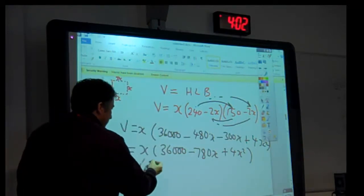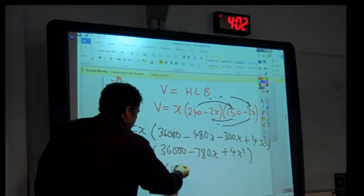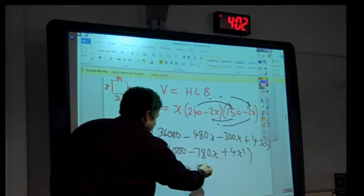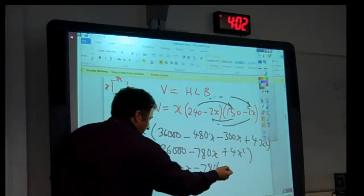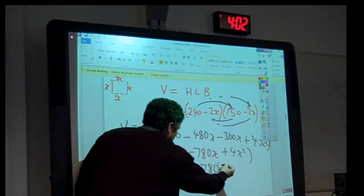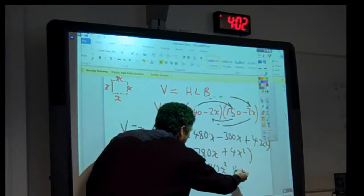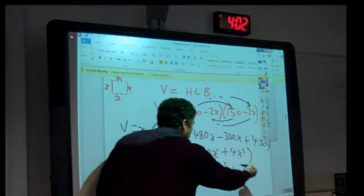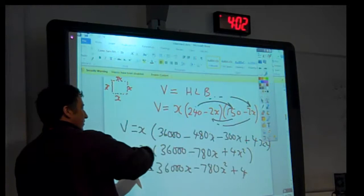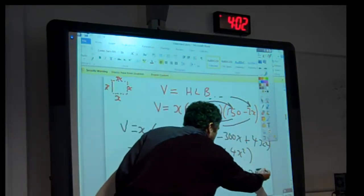This is the volume, remember. So we've got 36,000x minus 780, x1 and an x1, multiply, add the indices. So that's an x1 and x1 gives us an x2. Look at this. 4. That's a 1 there. 1 times 4 is 4. And an x2 and an x1 gives us an x3.